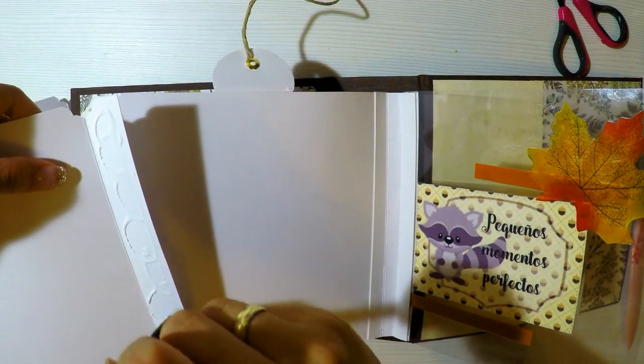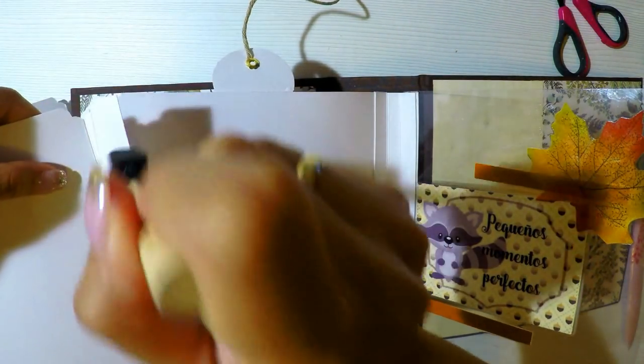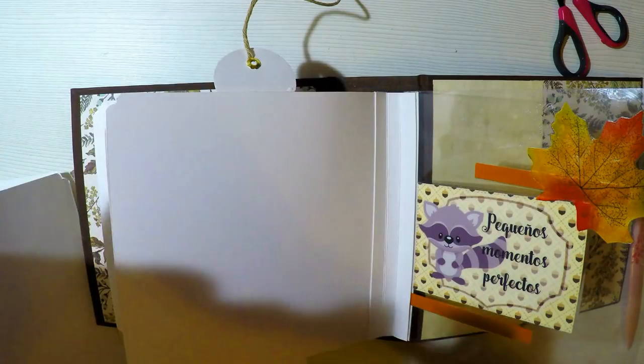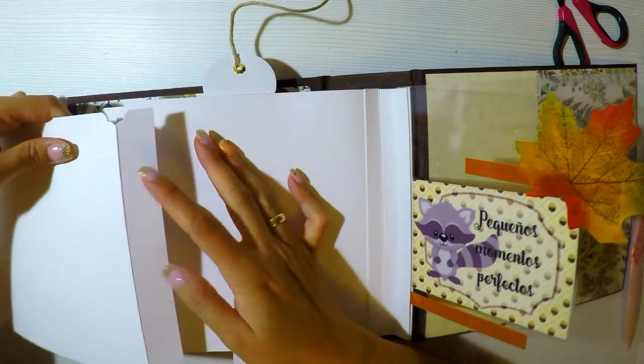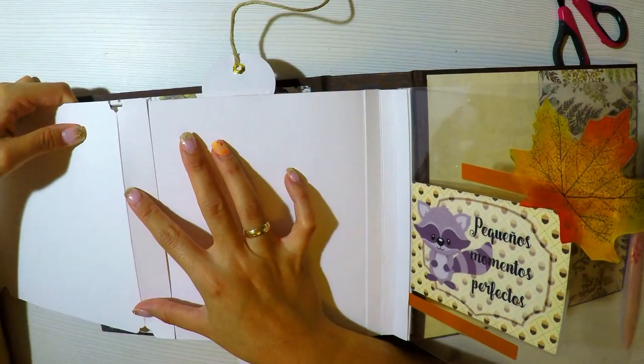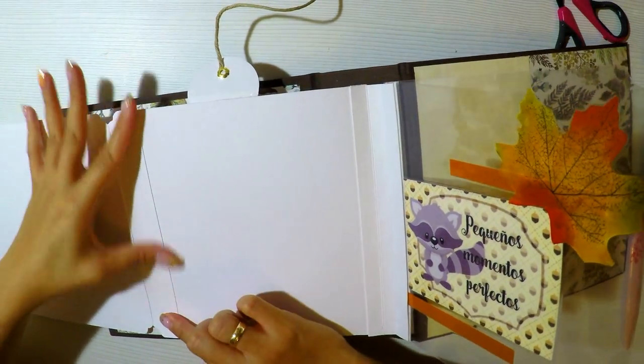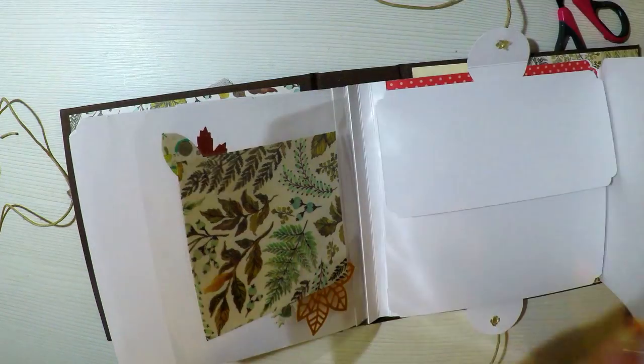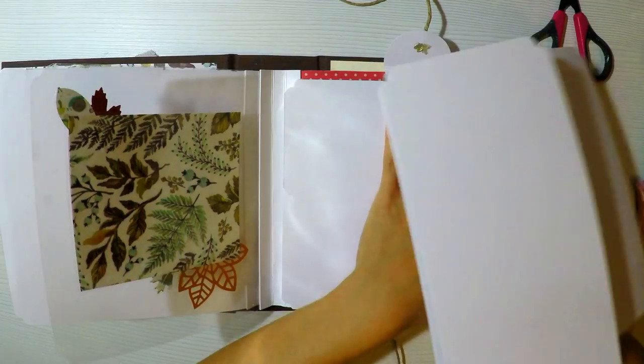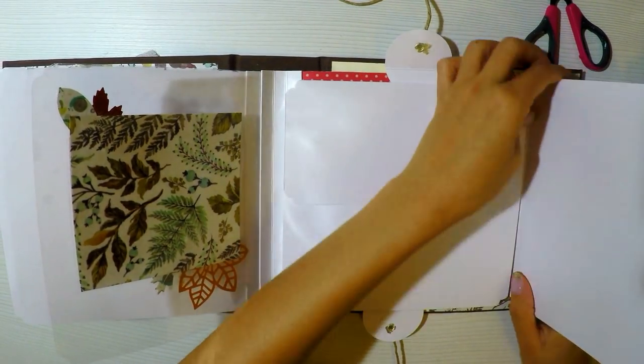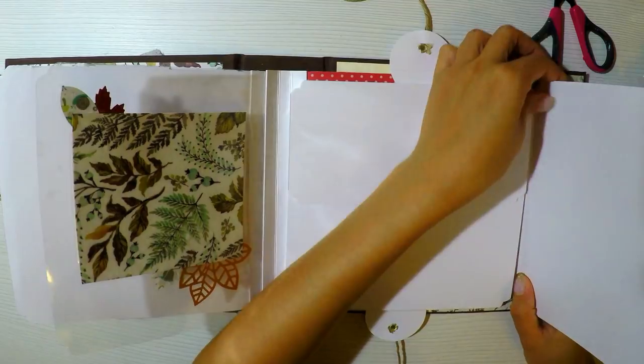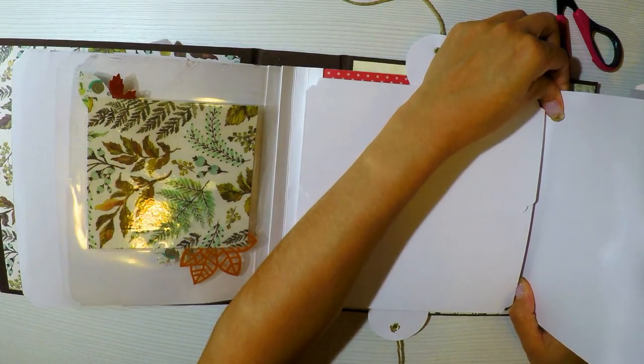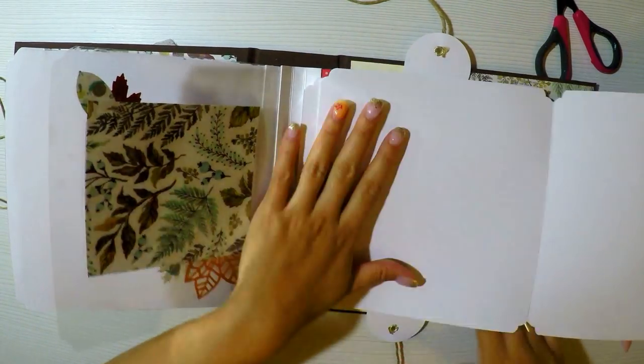Ahora voy a colocar el segundo acordeón. Voy a colocar pegamento en mi pequeña solapita de dos centímetros y lo que haré será pegarlo. Lo voy a pegar en la parte de atrás, pero lo podría pegar en la parte de delante. Yo lo que quiero es que haga el efecto de acordeón. Entonces yo lo he decidido poner atrás, pero puede ser también en la parte de adelante. Y aquí tengo mi acordeón. Voy a separar un poquito para que me cierre perfectamente la solapa y no me choque una con la otra. Tengo un acordeón en la parte de abajo.